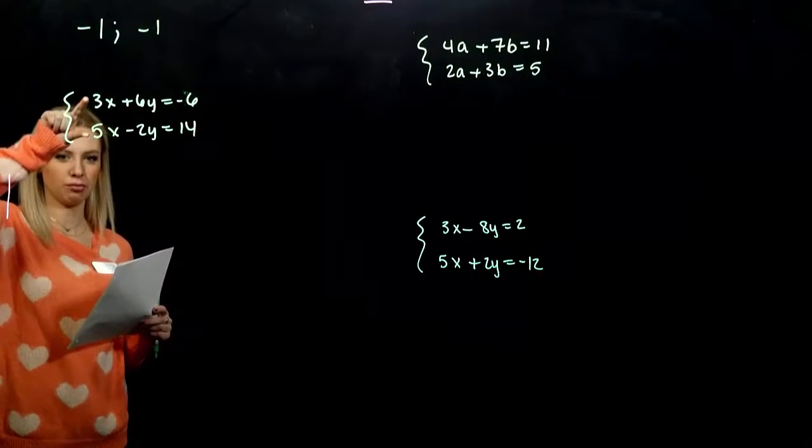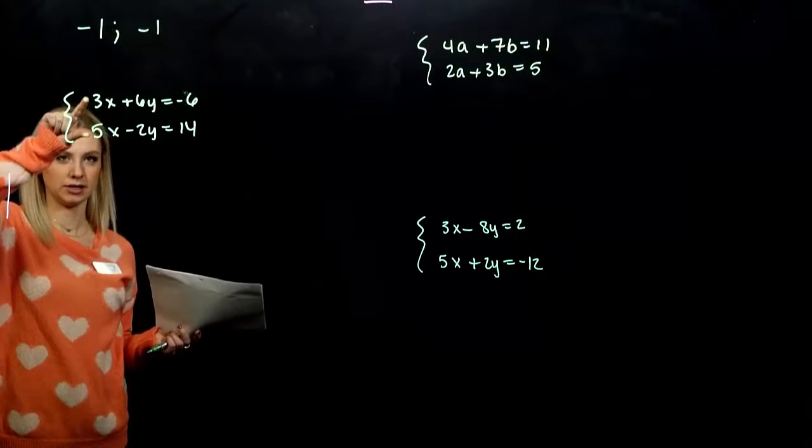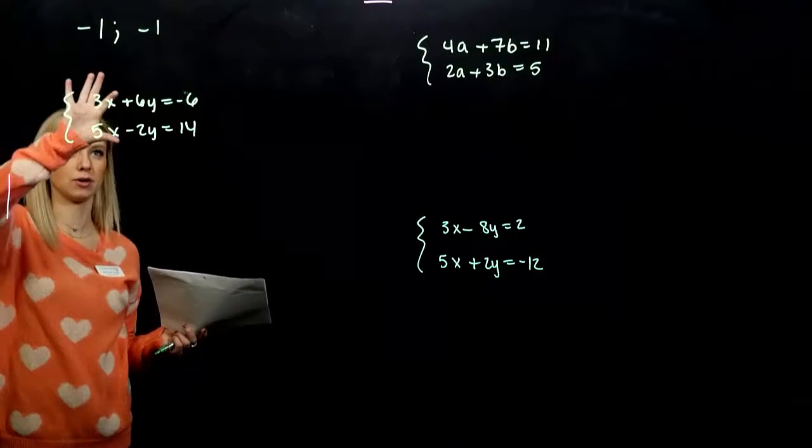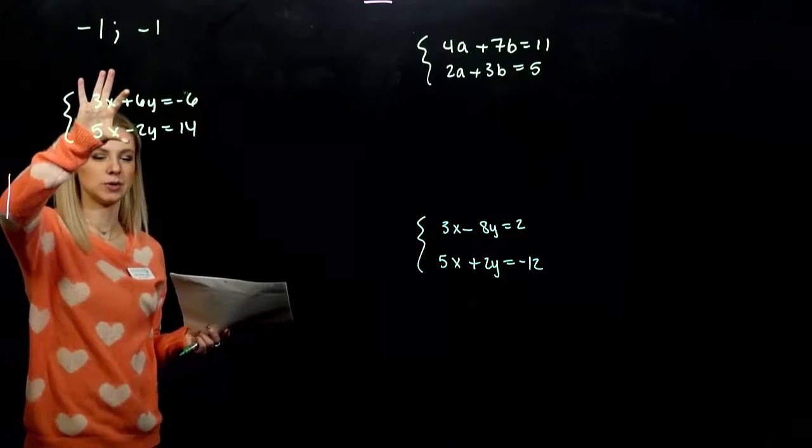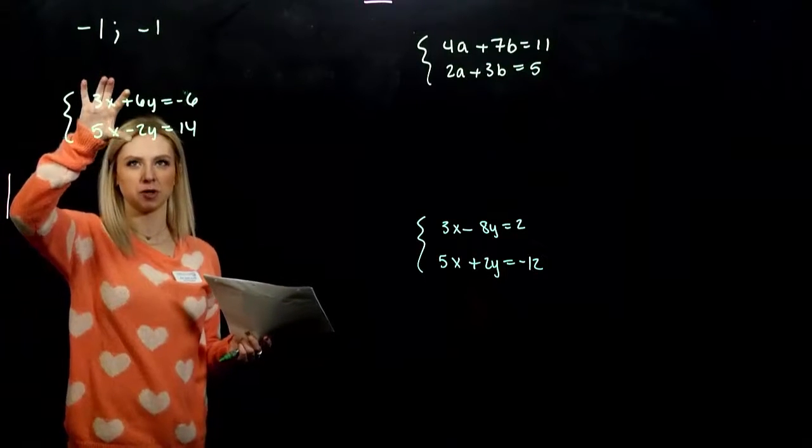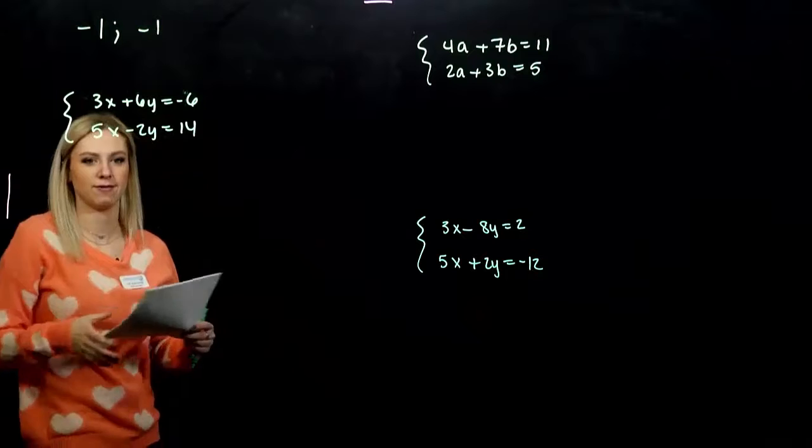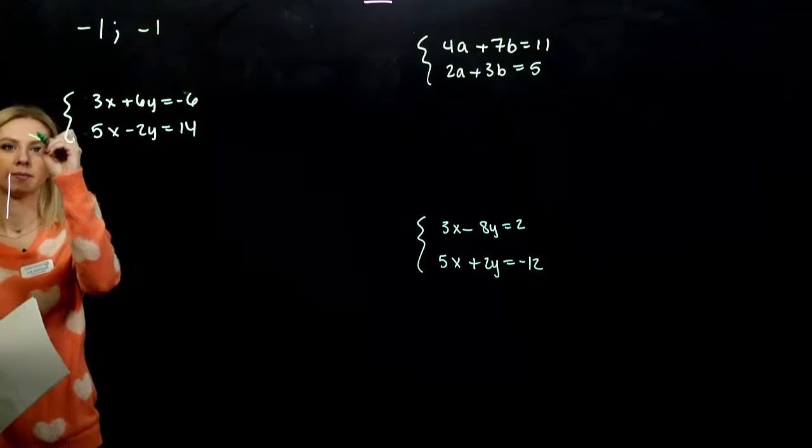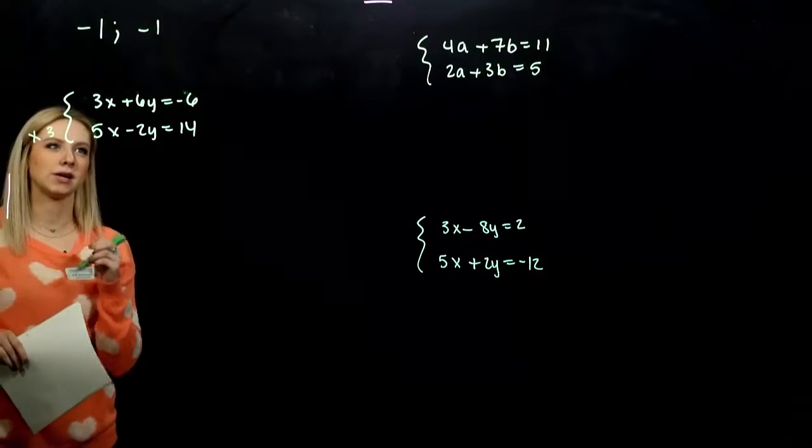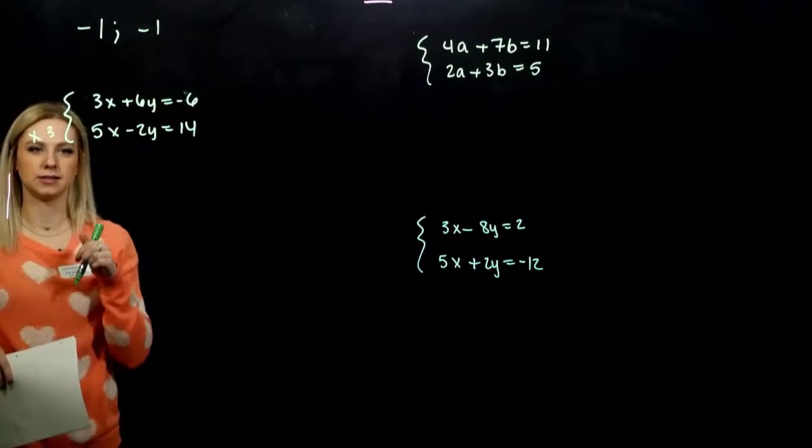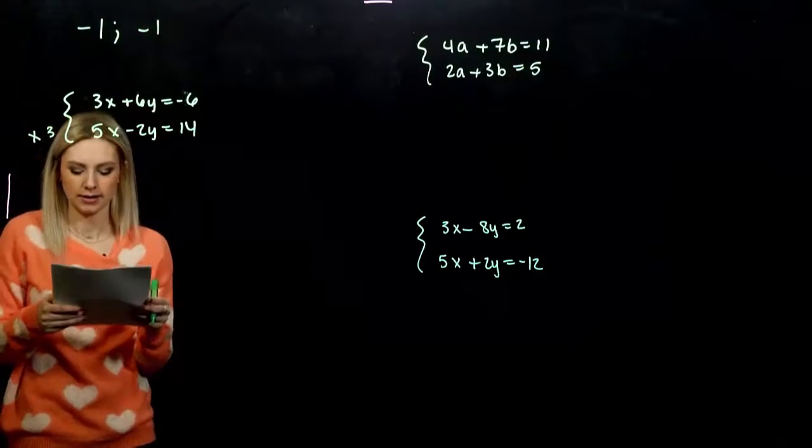So five and three LCD or LCM is 15. So I would have to alter both of those to get rid of them. But here between two and six, my least common multiple is six. So I only have to alter this one and by a factor of what? Times everything by three. So I want these to be the exact coefficients, but have opposite signs so that when I add it, it's eliminated.